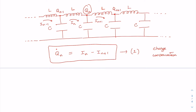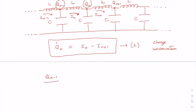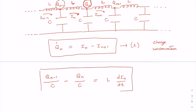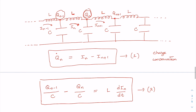The current i_n is driven by the voltage drop between nodes n and n-1. The voltage at node (n-1) is Q_{n-1}/C and at node n it is Q_n/C. This voltage difference must equal the voltage across the inductor L, which is L di_n/dt. So we get another equation from this voltage drop: (Q_{n-1} - Q_n)/C equals L di_n/dt. This current i_n is driven by the voltage drop between nodes n-1 and n.